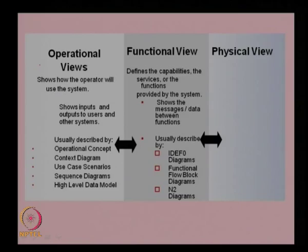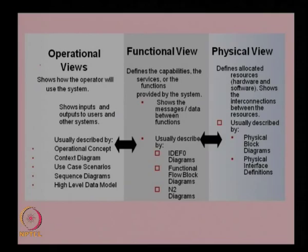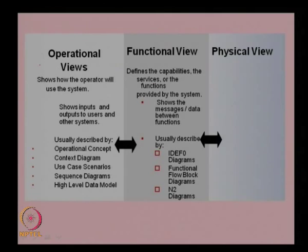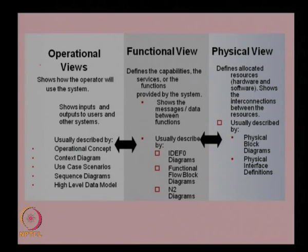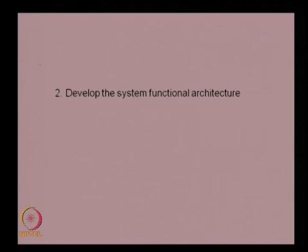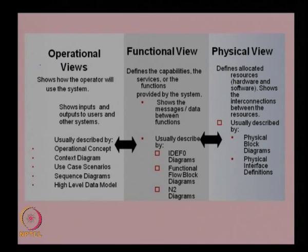The other view of the system is the physical view. In the physical view, we look at how to convert these functions into structural blocks or the physical architecture. It defines the allocated resources — that is the hardware and software — and shows the interconnections between the resources. These are usually described by physical block diagrams and physical interface definitions.